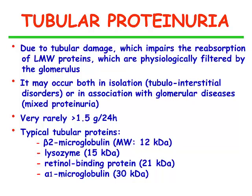Then we have tubular proteinuria, which is due to tubular damage which may occur either in tubular interstitial disease or in glomerular disease. Very rarely it exceeds 1.5 grams per 24 hours. It is characterized by the presence in the urine of proteins with low molecular weight, such as beta-2-microglobulin, lysozyme, retinal binding protein, and alpha-1-microglobulin.